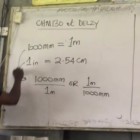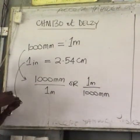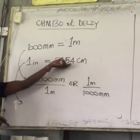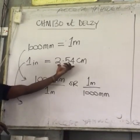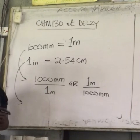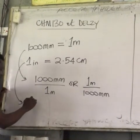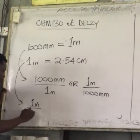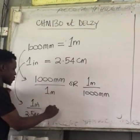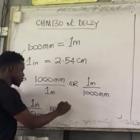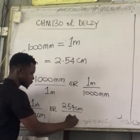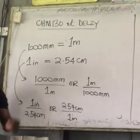For the second part, the relationship between inch and centimeter: 1 inch equals 2.54 cm. So I can express this as 1 inch over 2.54 cm, or 2.54 cm over 1 inch.